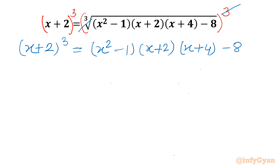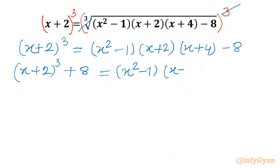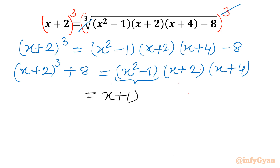Now add 8 to both sides, giving (x plus 2)³ plus 8 equal to (x squared minus 1)(x plus 2)(x plus 4). I will write x squared minus 1 as (x plus 1)(x minus 1), then we have the (x plus 2) bracket and the (x plus 4) bracket on the right-hand side.